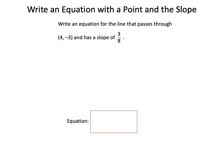In this video we're going to write an equation for a line that passes through a point and that we also have a given slope for. We are given a point, (4, -3), and a slope of 3/8.